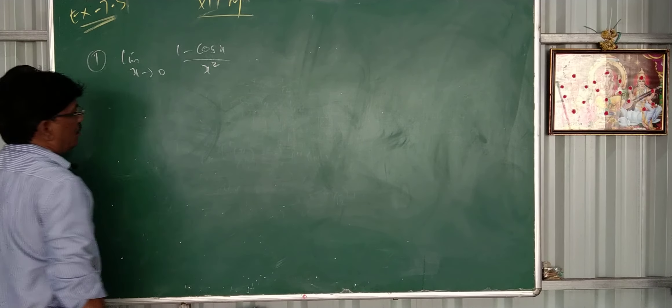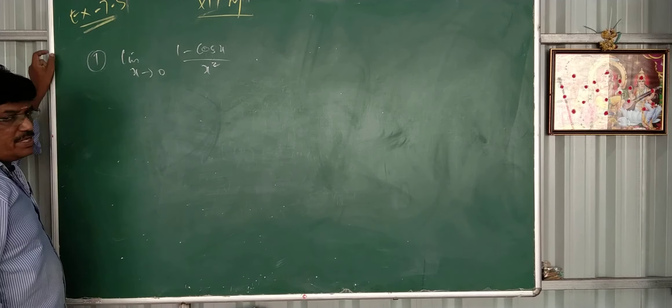See, in this you need to check if you get 0 by 0 or infinity by infinity form. So first apply x equals 0 here to verify.